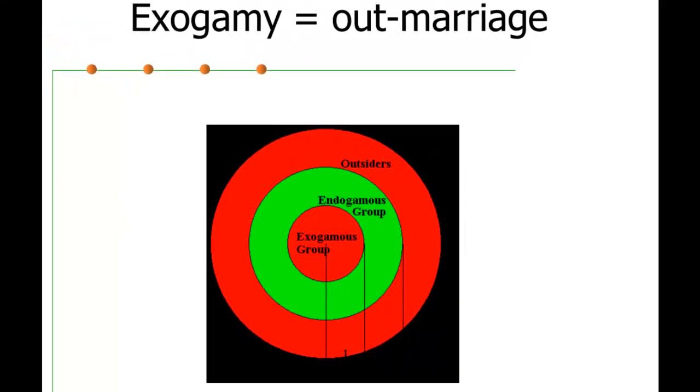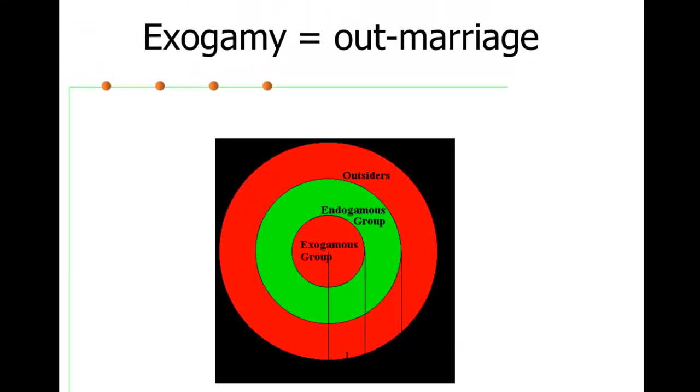Now what we mean by exogamy is out-marriage, and if there's lineage exogamy, it means that you marry outside of your lineage. Endogamy means in-marriage, and some lineages around the world, and some corporate descent groups are endogamous, and in that case the conventions that govern our charts don't hold. So it's important to recognize in interpreting these charts that they're based on certain conventions, and one of those is lineage exogamy. You're marrying outside of your own descent group.